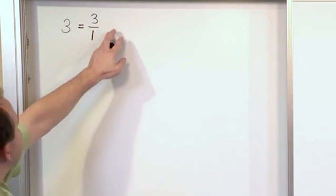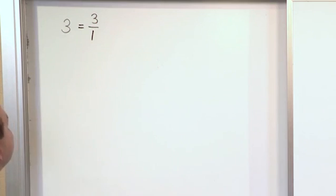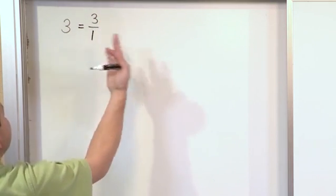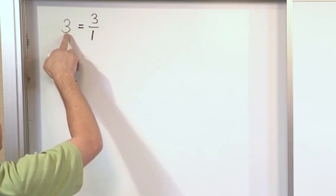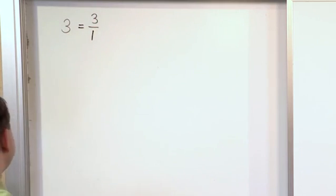Now, when you look at this, and now that you know that fractions really represent division, if you take 3 and divide it by 1, you just get the number 3. So the whole number 3 can be written as 3 over 1.